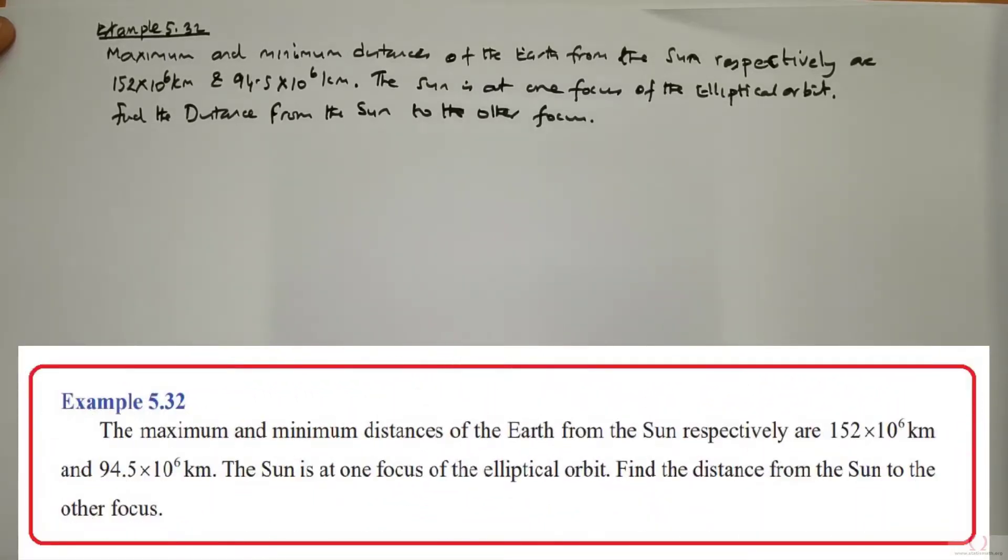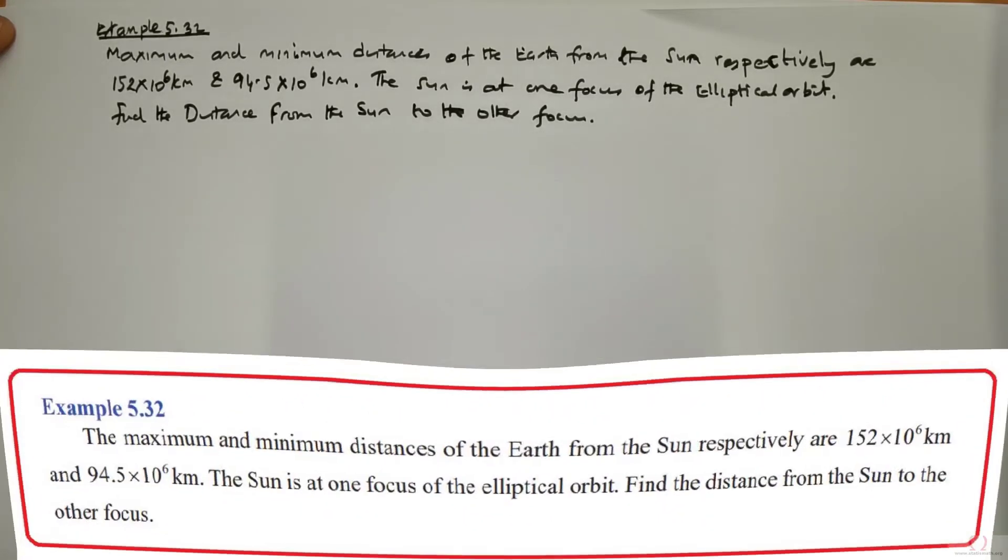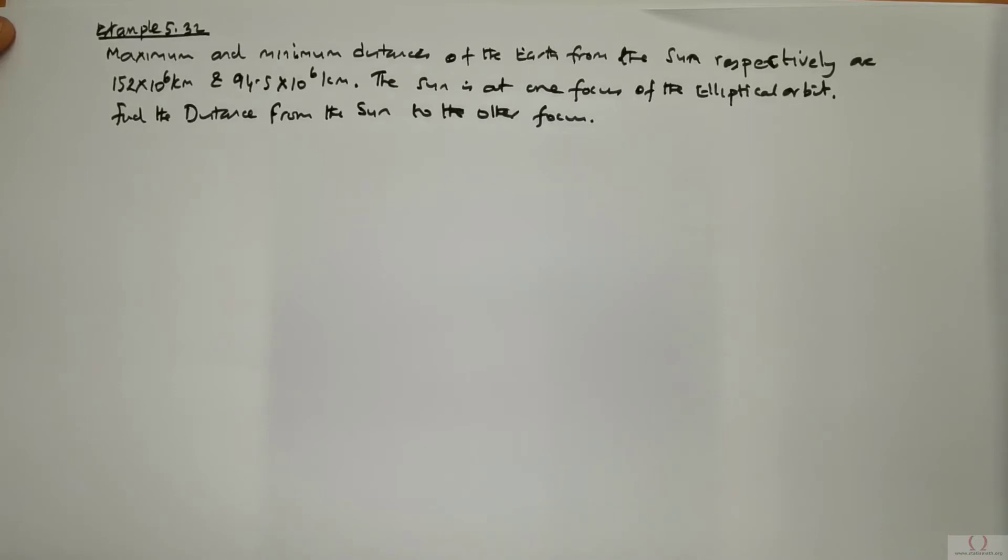We are going to do this question. The maximum and minimum distance of the Earth from the Sun respectively are 152 times 10 to the power 6 kilometers and 94.5 times 10 to the power 6 kilometers.